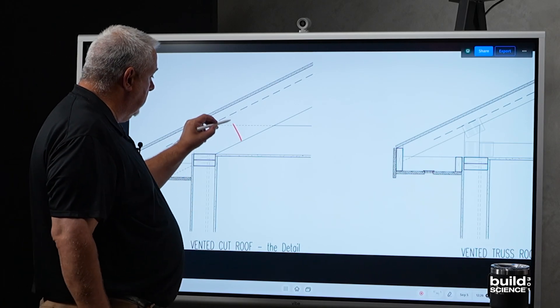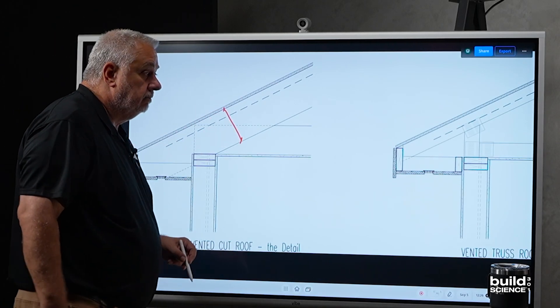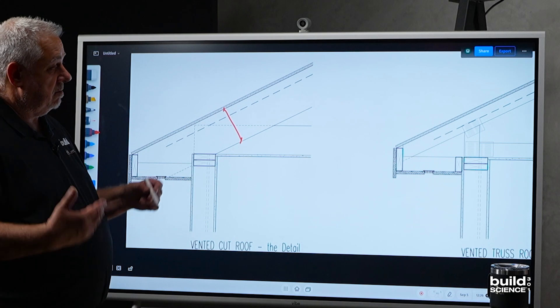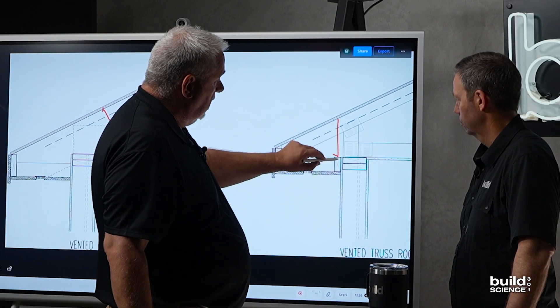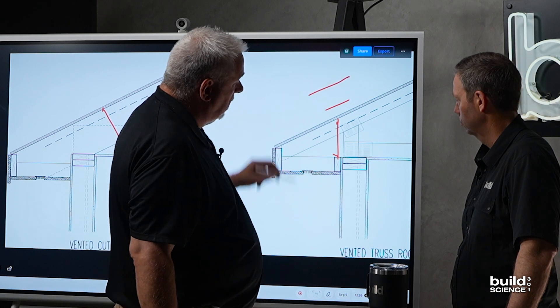A cut roof is you're limited to whatever that dimension is, right? The truss, I can make a raised heel, I can change this height here, and I can push that truss up here if I want.